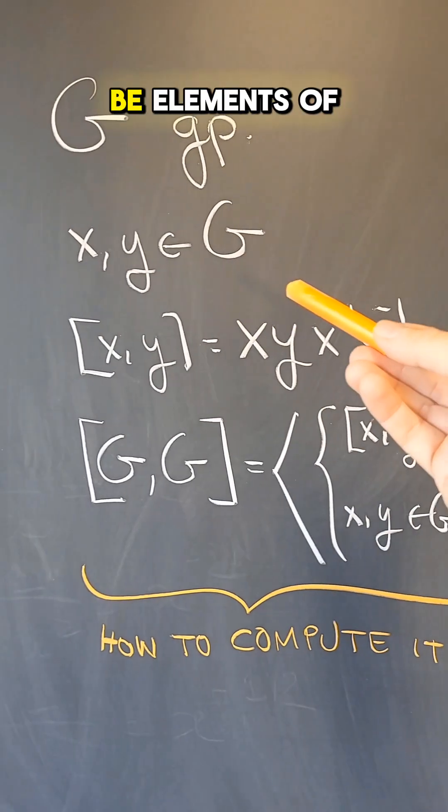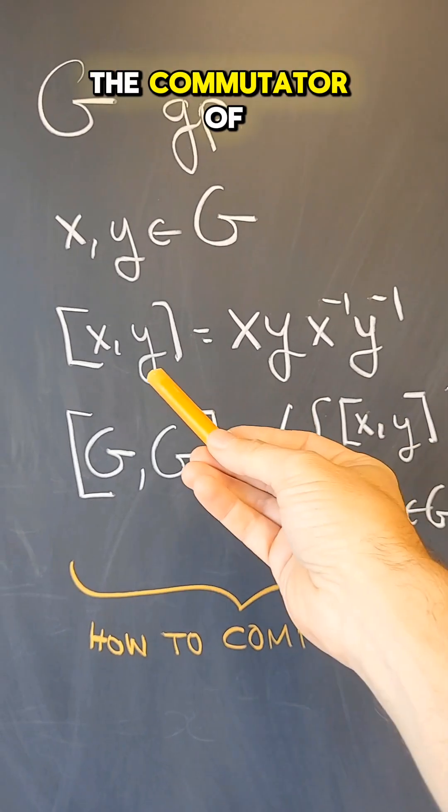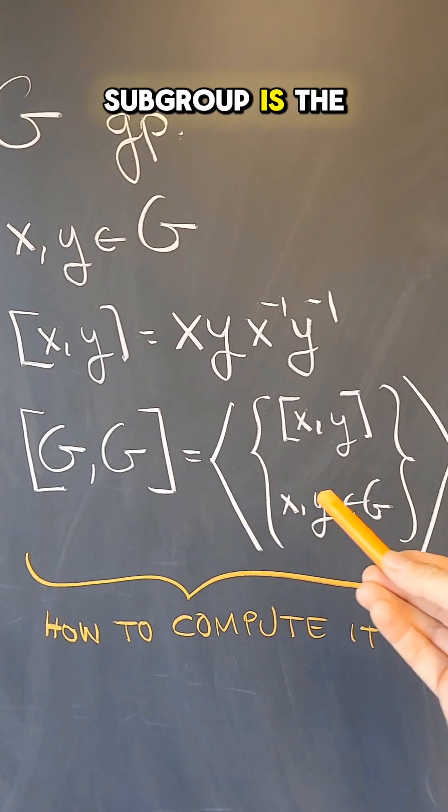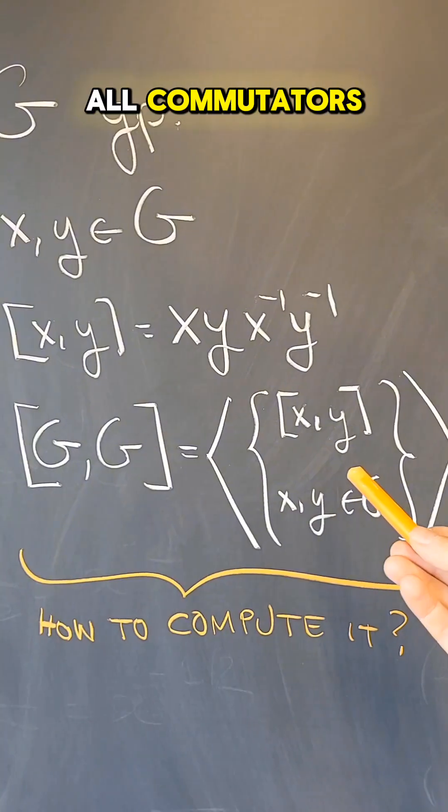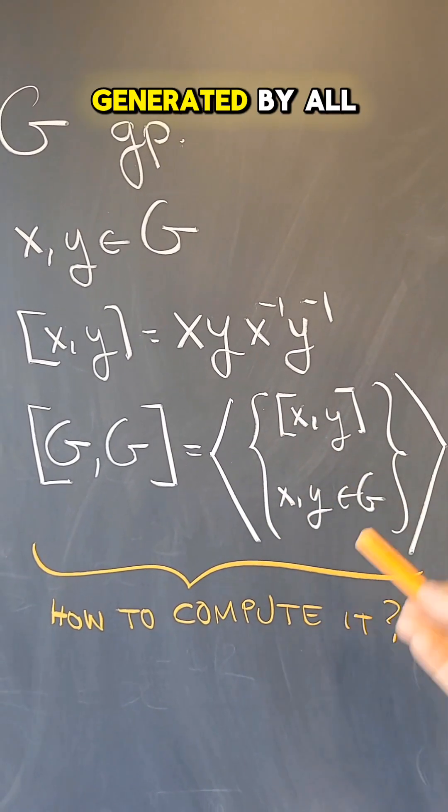Let G be a group, let X and Y be elements of the group. This element is what we call a commutator, the commutator of X and Y, and the commutator subgroup is the subgroup generated by all commutators. It's not the set of commutators, it's the subgroup generated by all commutators.